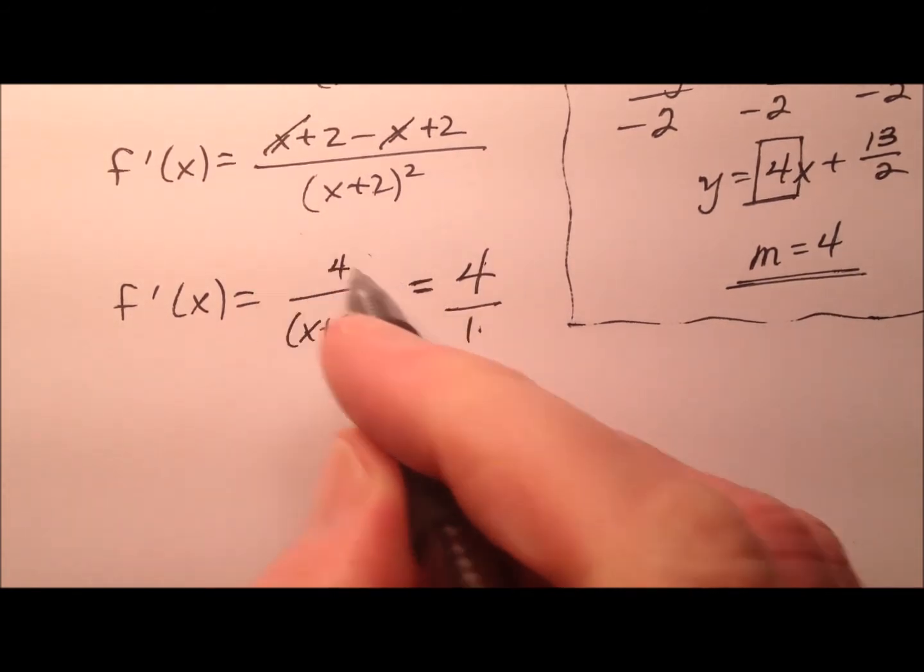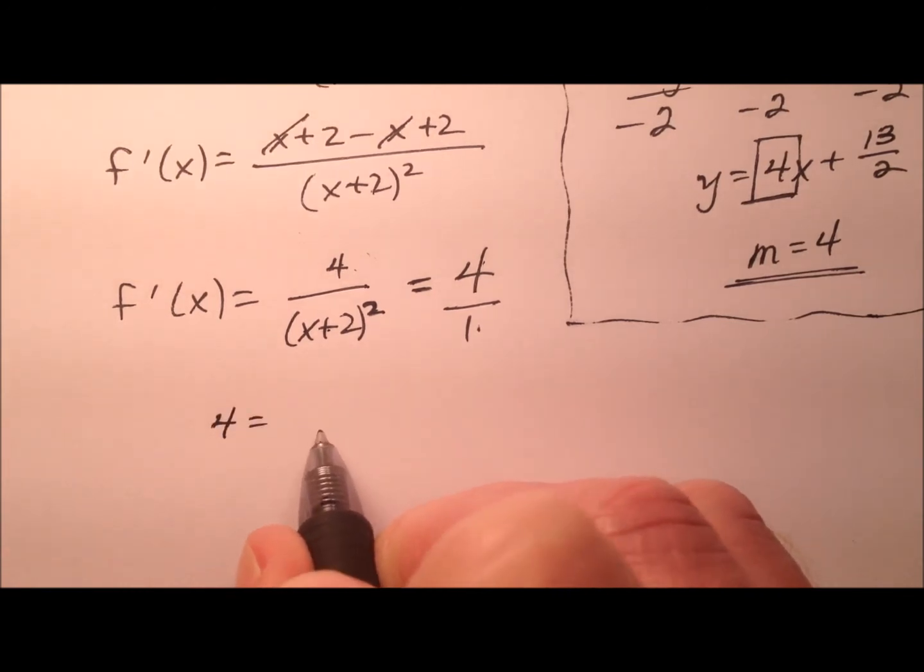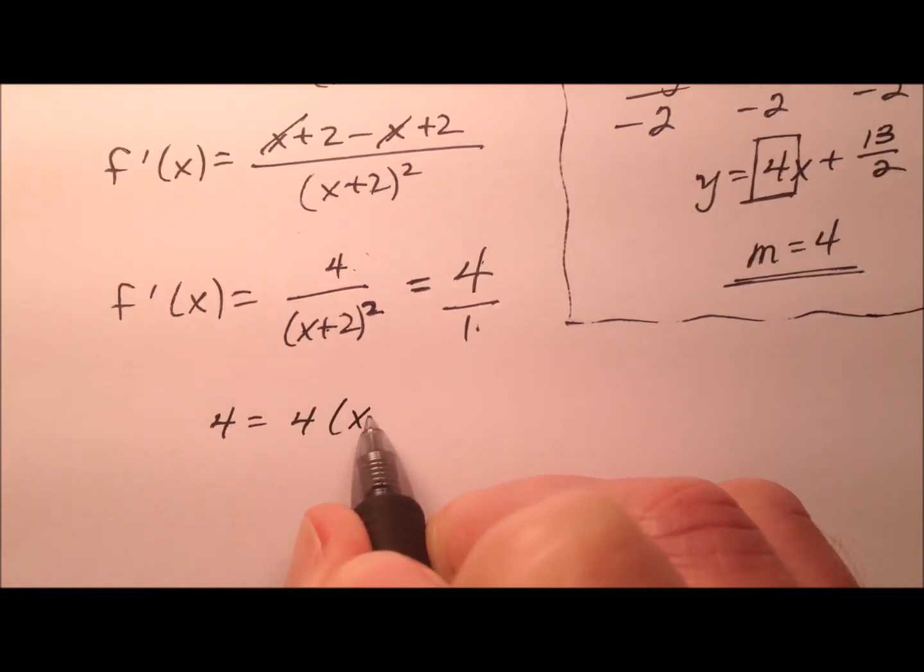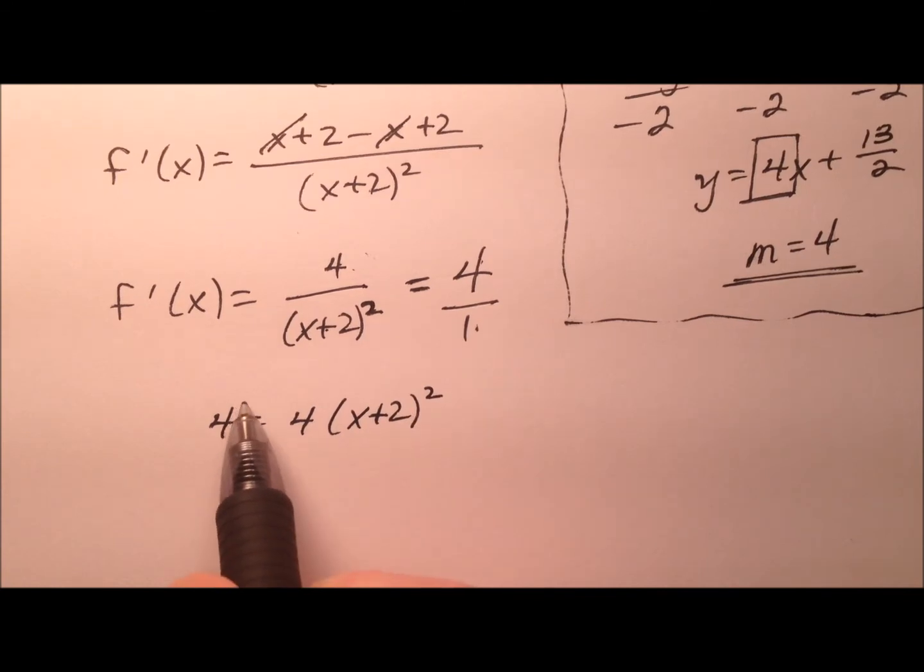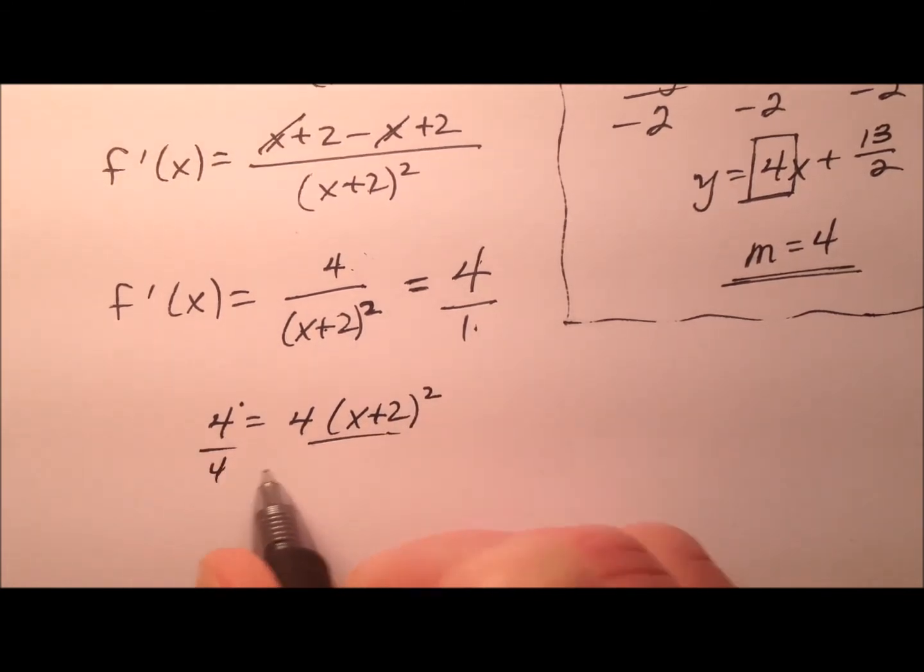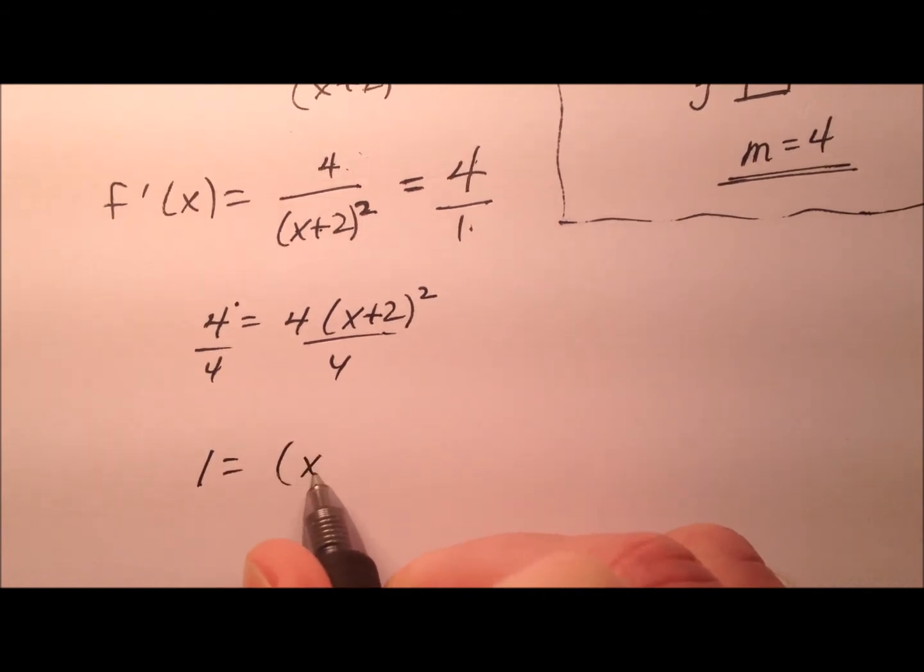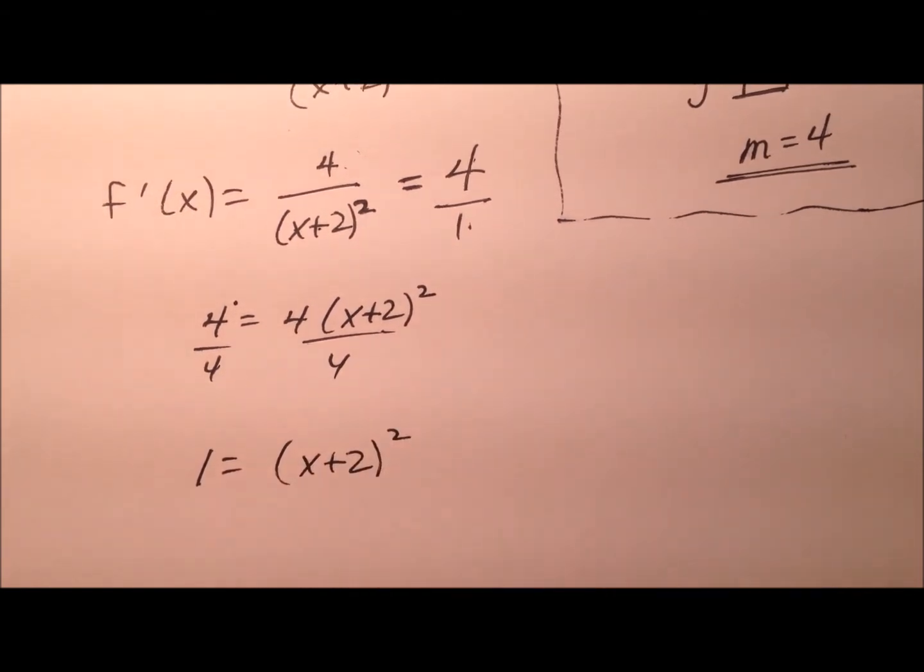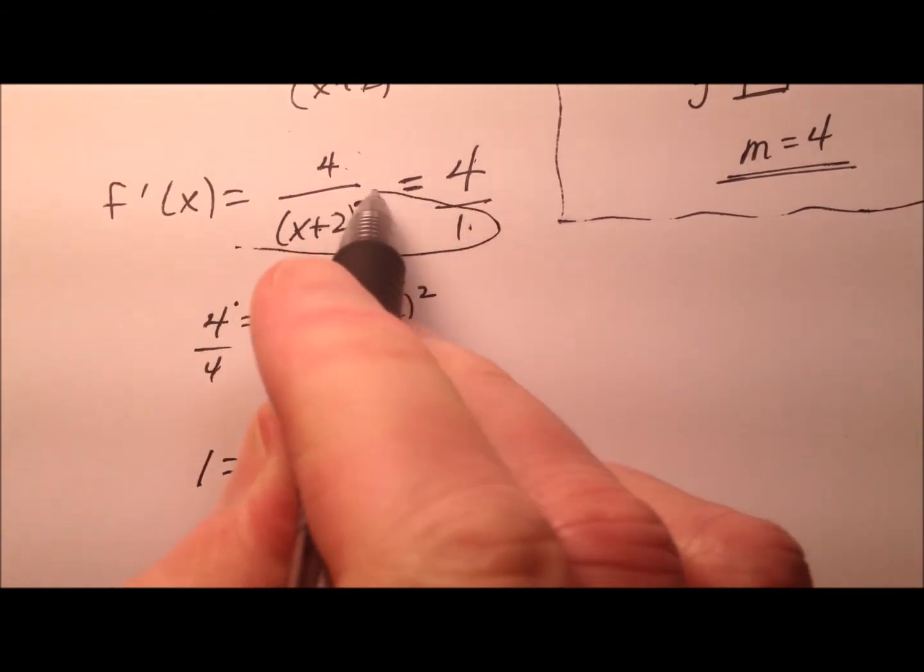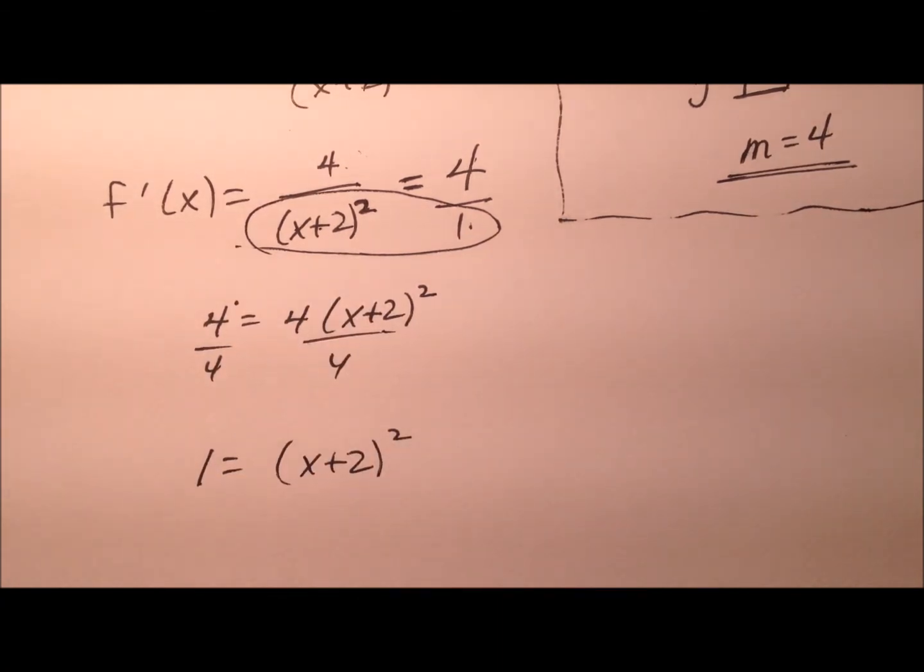So we could, if you wanted to, do cross products real quick, and you're just going to see that these 4s are just going to end up canceling out when I divide everything by 4 anyway. So 1 equals x plus 2 quantity squared, which really was just the denominators here anyway.